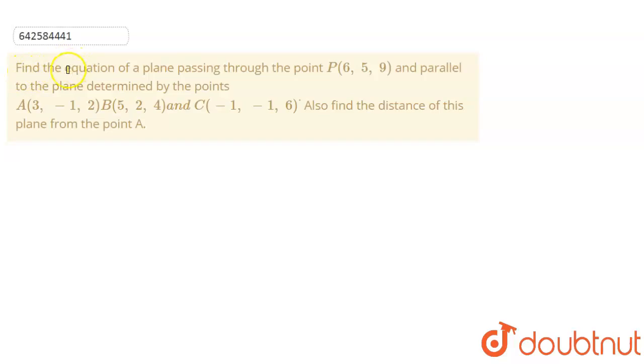Welcome to Doubtnet. So this is the question. Find the equation of the plane passing through the point P(6,5,9) and parallel to the plane determined by the points A(3,-1,2), B(5,2,4) and C(-1,-1,6). Also find the distance of this plane from the point A.